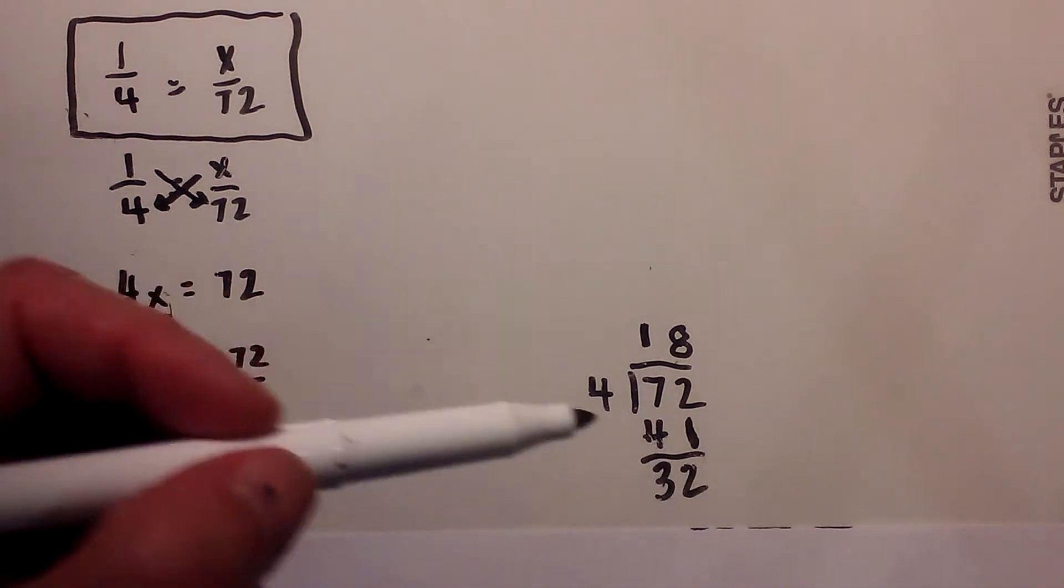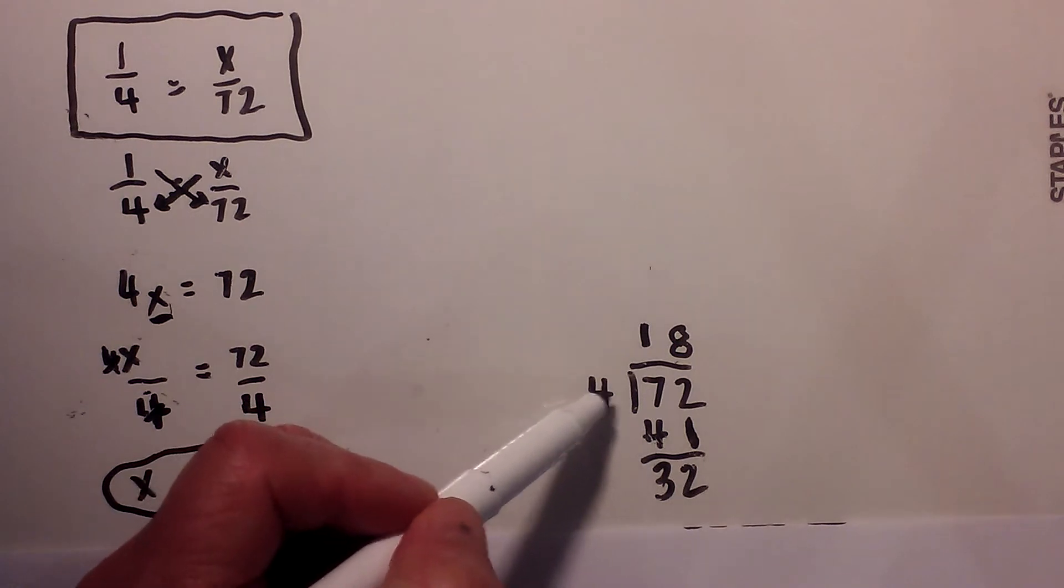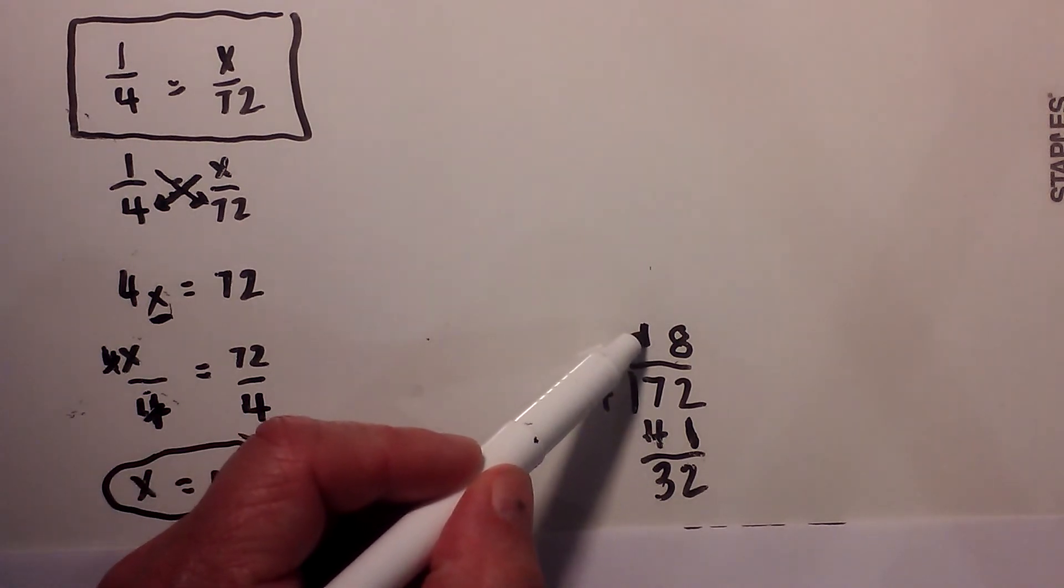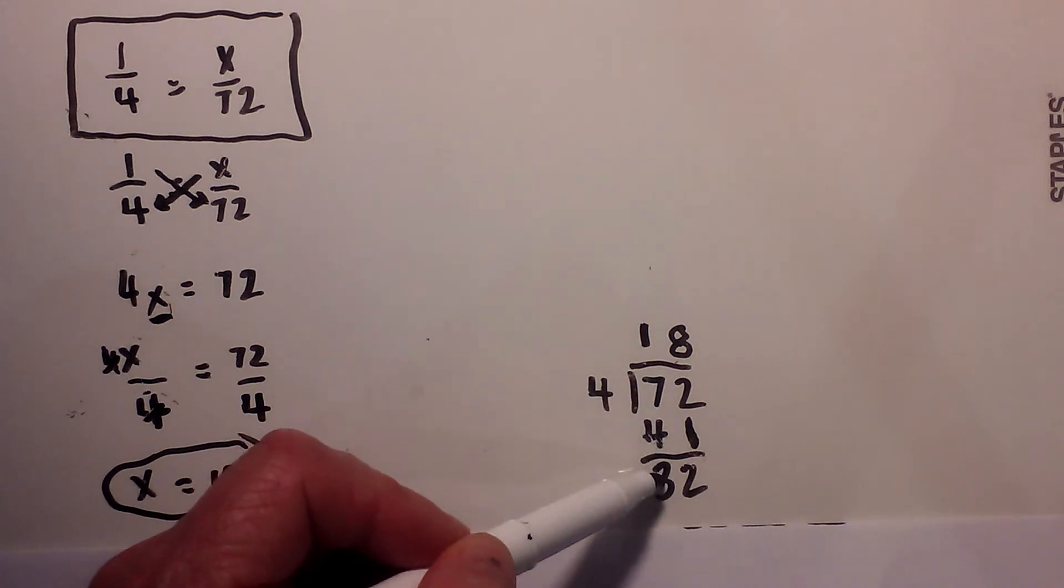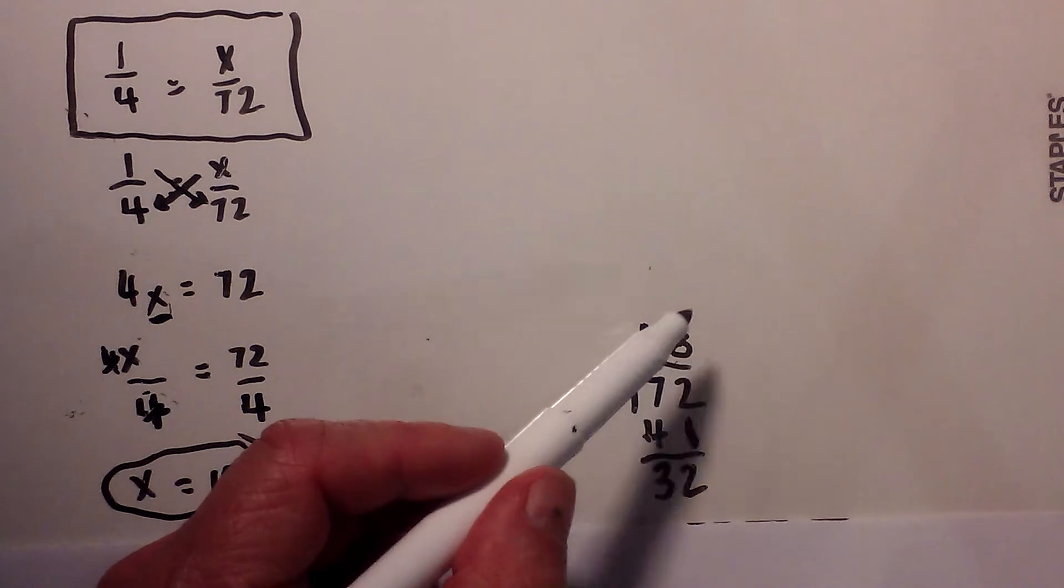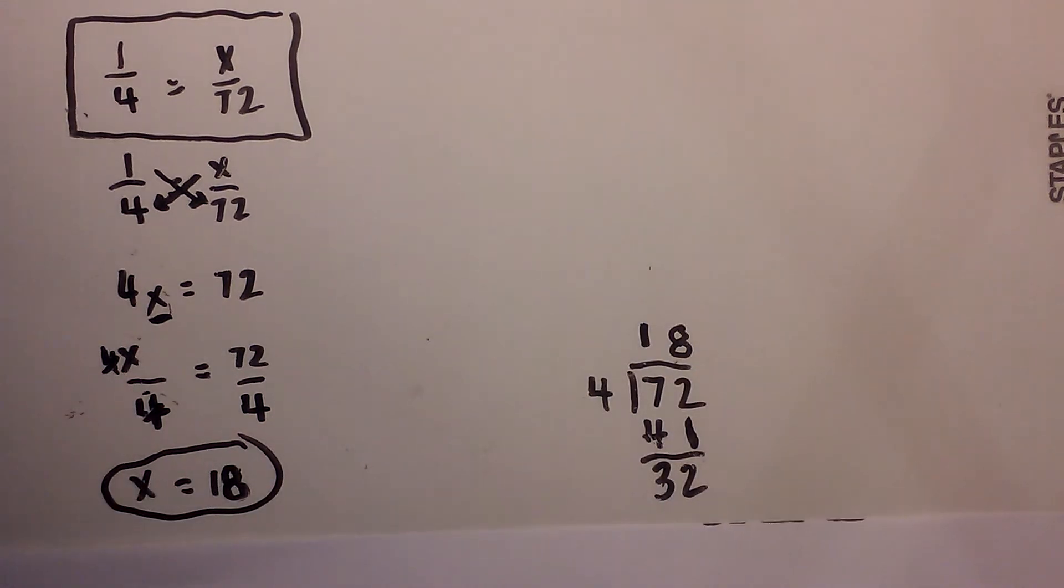And then let's divide 72. 4 will go into 7 one time, 1 times 4 is 4, 7 minus 4 is 3. 4 into 32 will go 8 times. And therefore x is equal to 18.